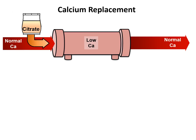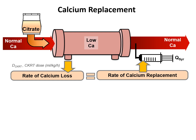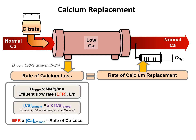Calcium replacement is an important part of regional citrate anticoagulation. We want to ensure that calcium is normal at the beginning of treatment. When blood enters the circuit with citrate, we achieve a low calcium in the dialyser, and when the blood returns to the patient, we want to ensure the patient is normocalcemic. The general principle is that the rate of calcium lost should be equivalent to the rate of calcium replacement. Calcium is lost through the dialyser effluent, and also in the effluent there is the calcium-citrate complex.